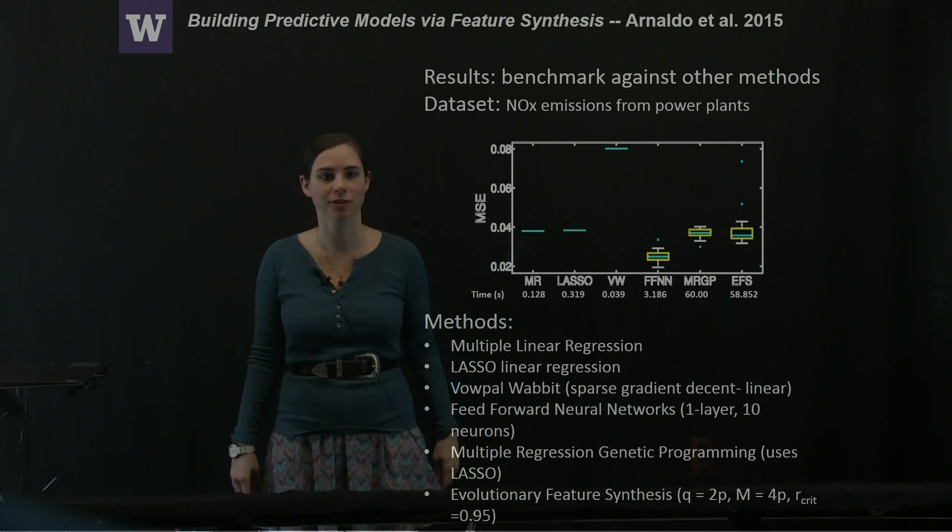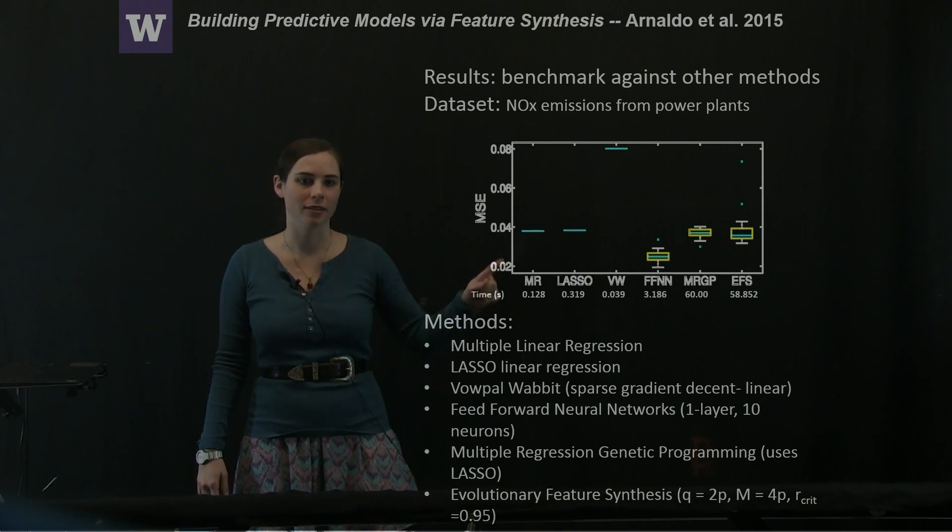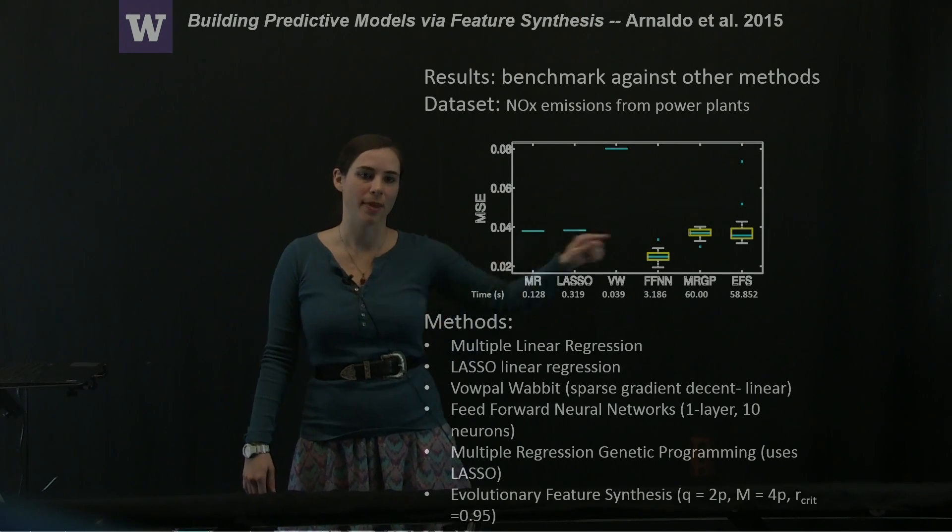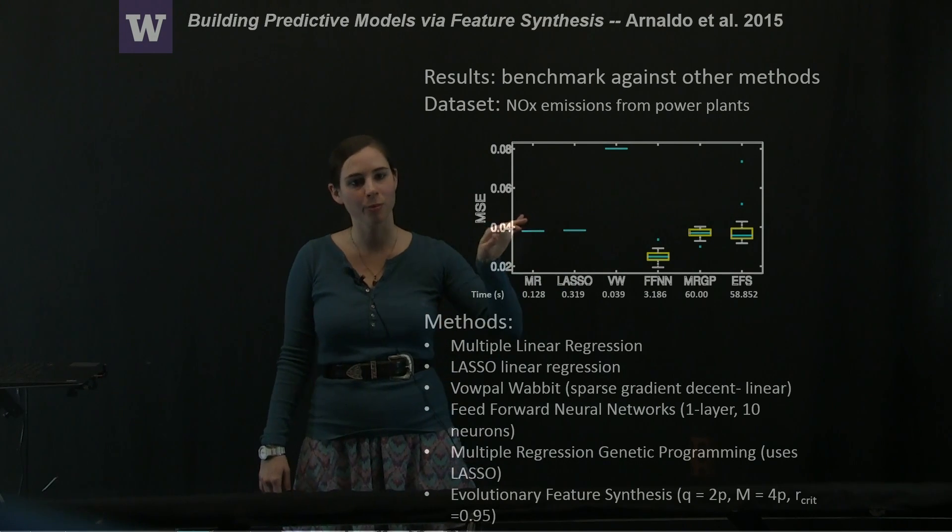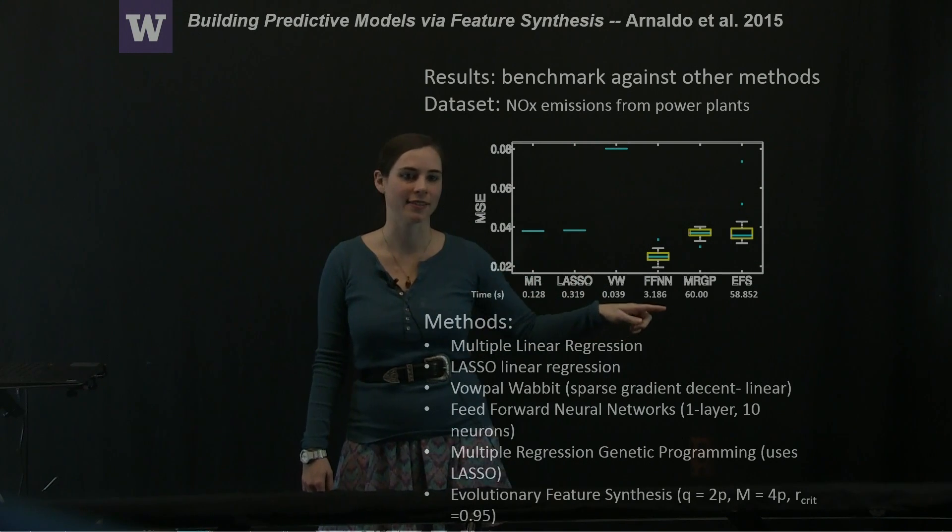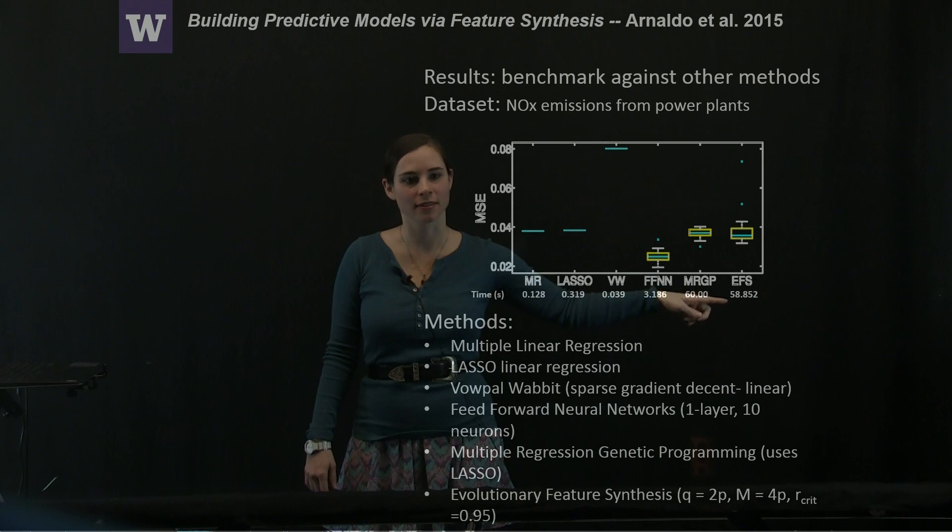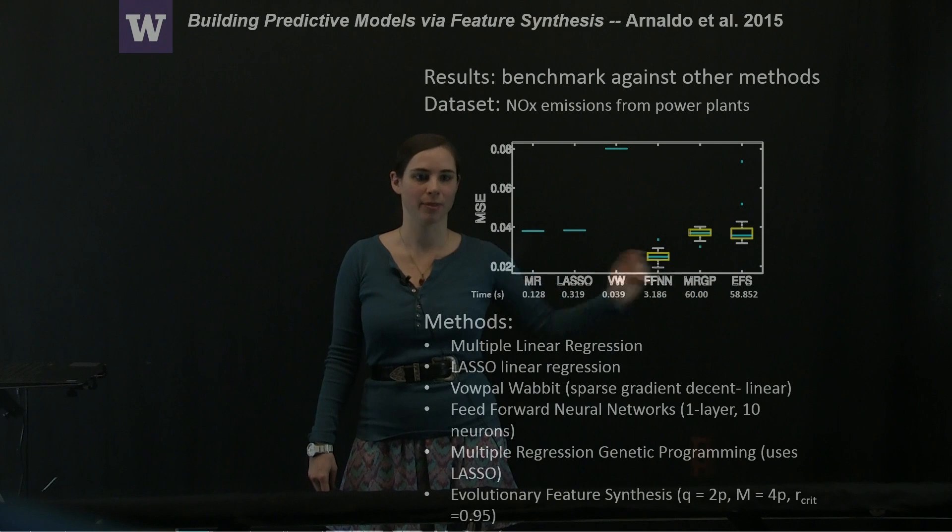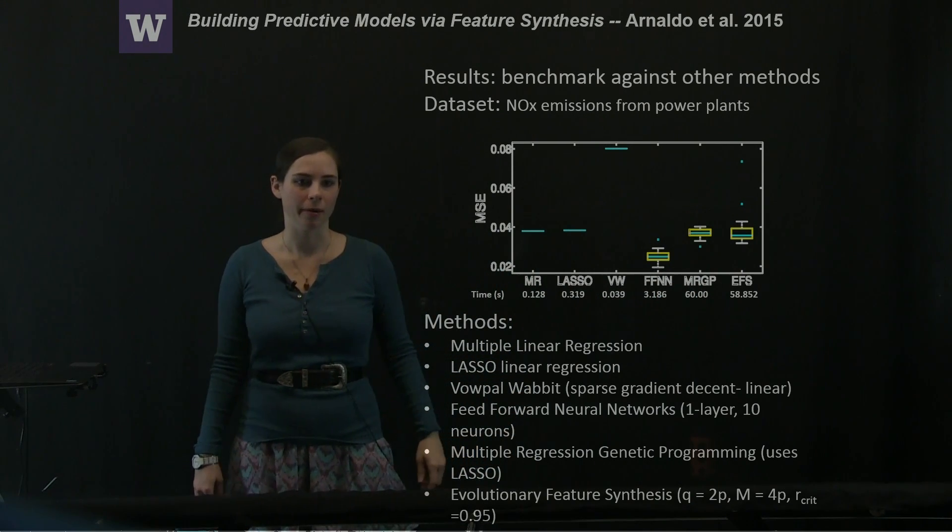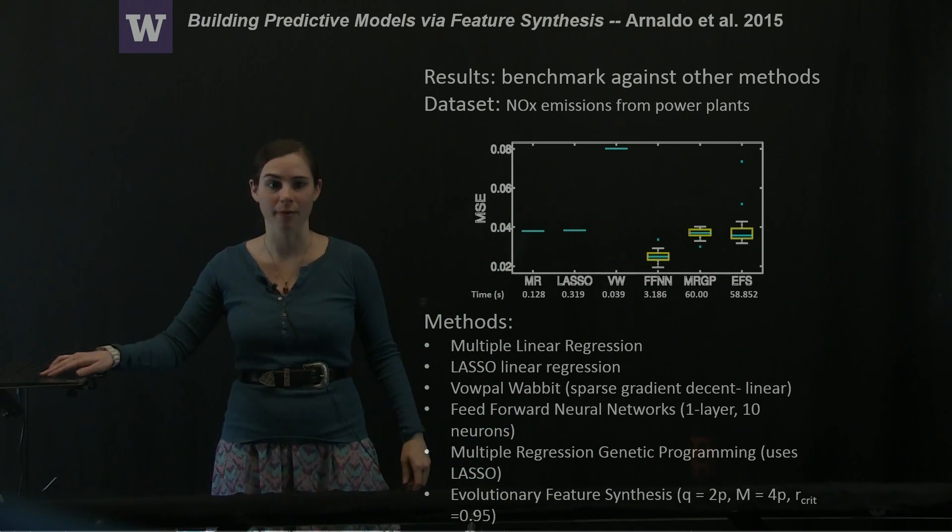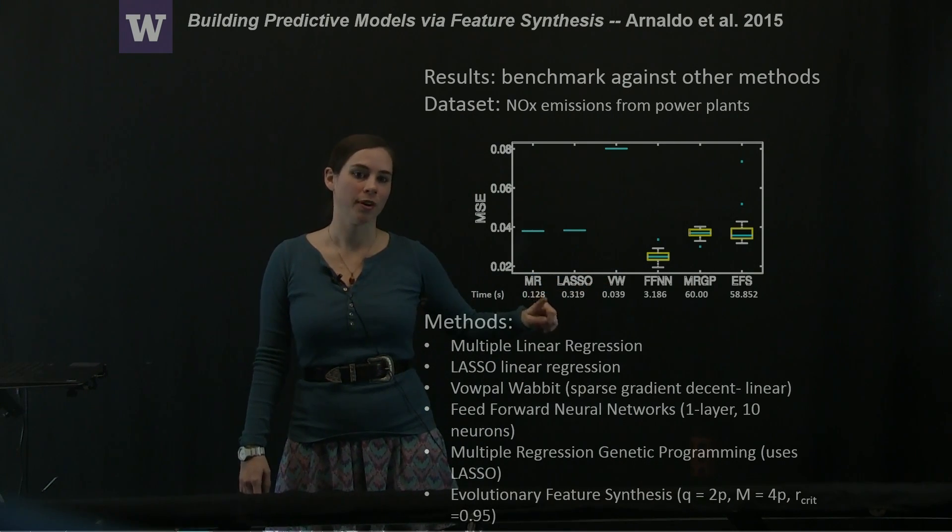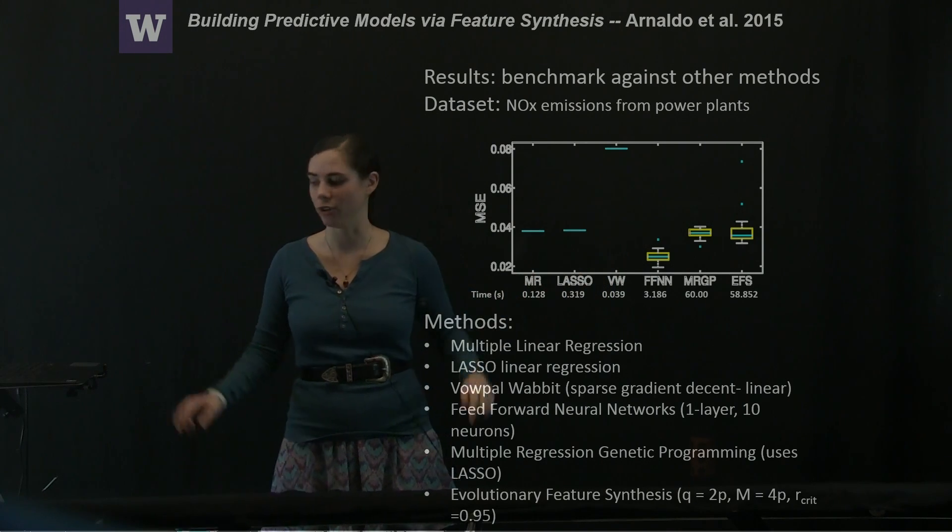Here's the NOx emission from power plants, and basically it looks like maybe all of these models, or all these methods produce models that are comparable in mean squared error, except for this one. Again, the linear methods are very fast, and in this case, for some reason, the evolutionary feature synthesis model is not actually that much faster than the multiple regression genetic programming model. And again, the feedforward network is only about an order of magnitude slower than the linear methods.